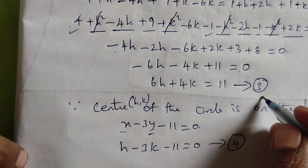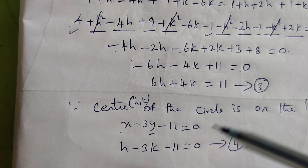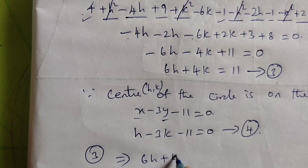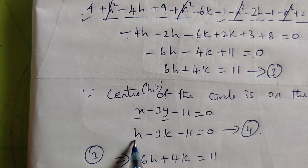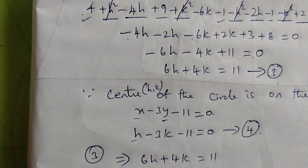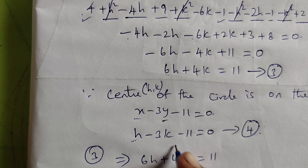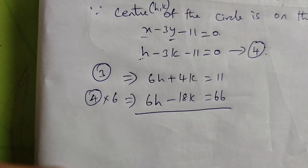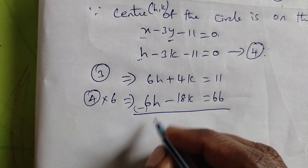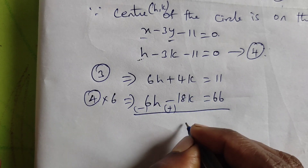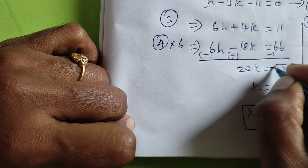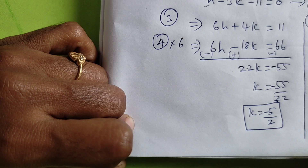Now we solve equations 3 and 4 simultaneously to find h and k. Taking equation 3: 6h plus 4k equals 11. To eliminate 6h, multiply equation 4 by 6: 6h minus 18k equals 66. Subtracting, 6h cancels, and we get 22k equals minus 55, so k equals minus 5 by 2.